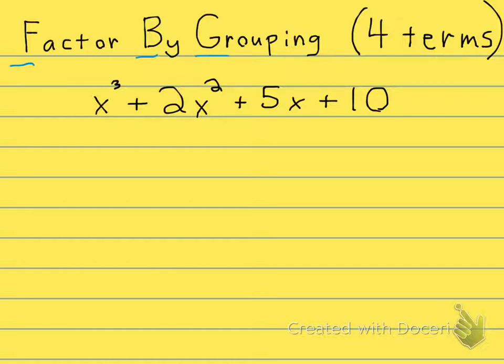You're going to see the instructions to factor by grouping very commonly when you see a four-term polynomial. So if you see four terms, one, two, three, four, you might expect factor by grouping.